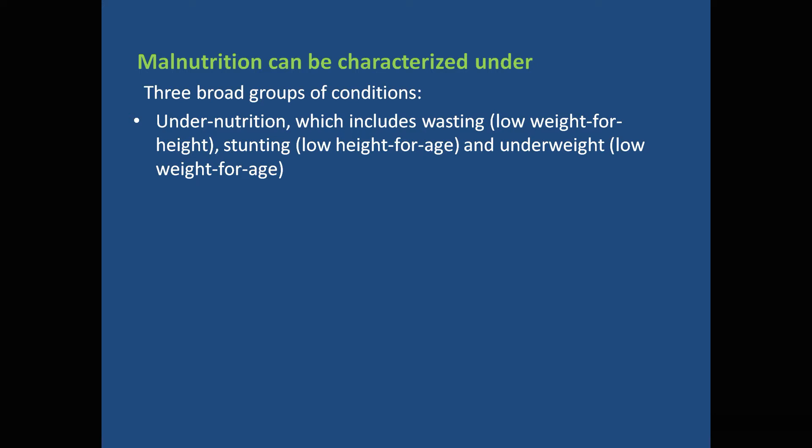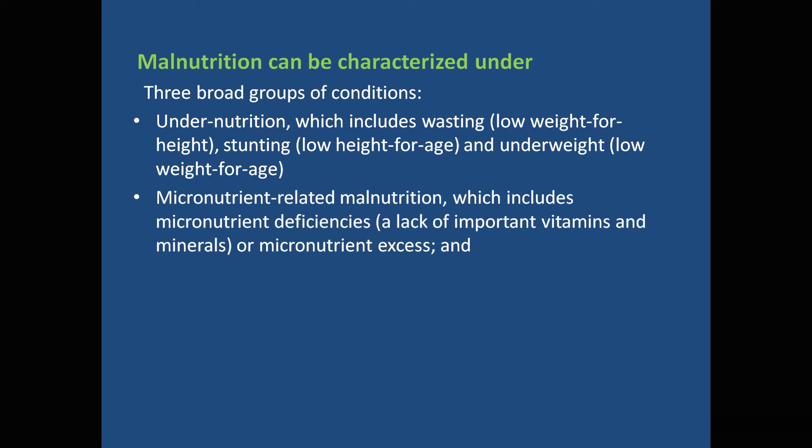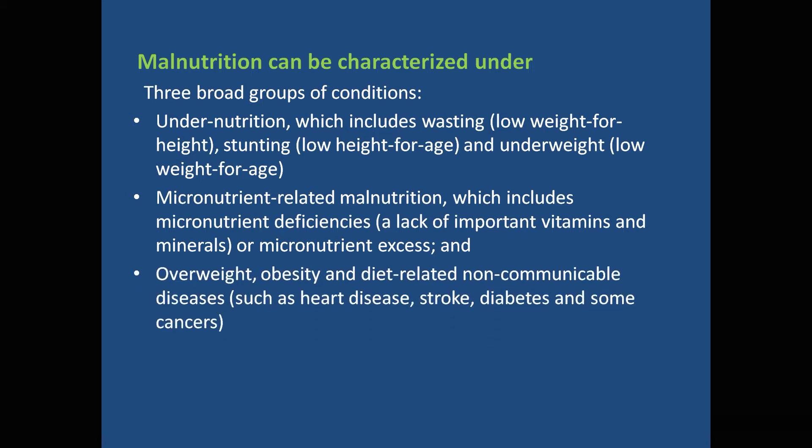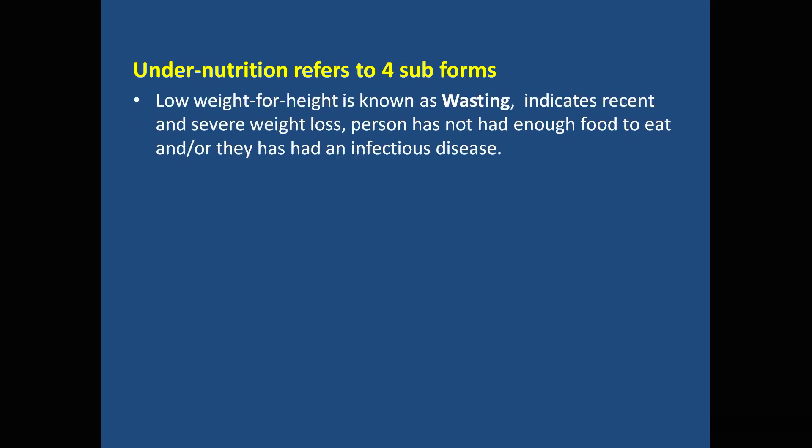Malnutrition can be characterized in three broad groups. One is under-nutrition, which includes wasting — very low weight for a particular height — stunting — low height for age — and underweight — low weight for age. Then we have micronutrient-related malnutrition, which includes micronutrient deficiencies such as iron deficiency. Then we have overweight and obesity, as discussed in the last video, along with related problems such as heart disease and stroke.